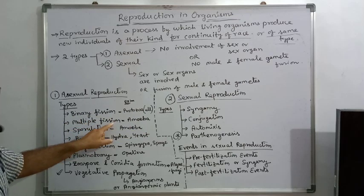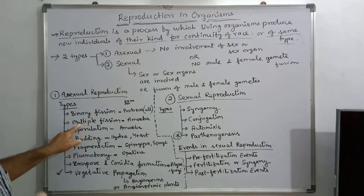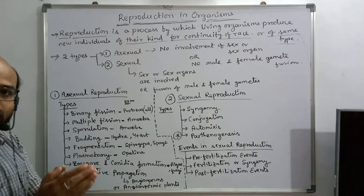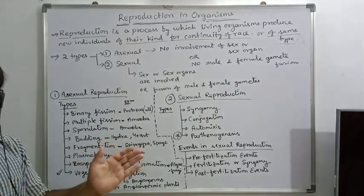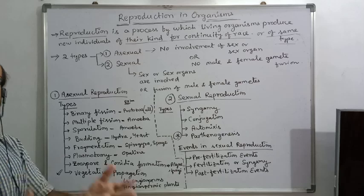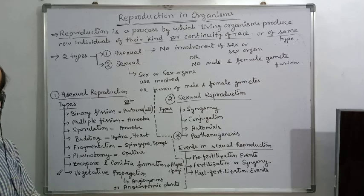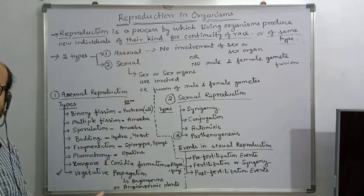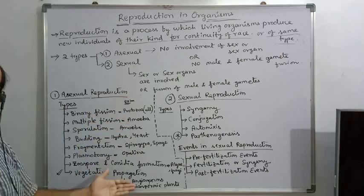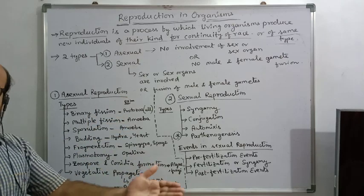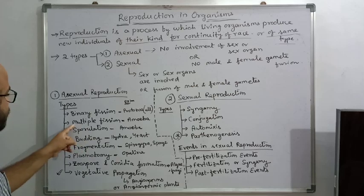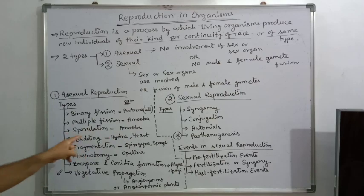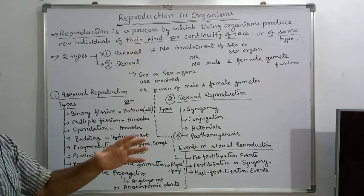Multiple fission: 'multiple' means more, and 'fission' again means breakdown. A living organism can be broken down into multiple pieces to form multiple new offsprings — new living organisms. The mostly cited example is Amoeba. There are a few more examples also available. Multiple fission example: mostly Amoeba and other protozoans of the same category.